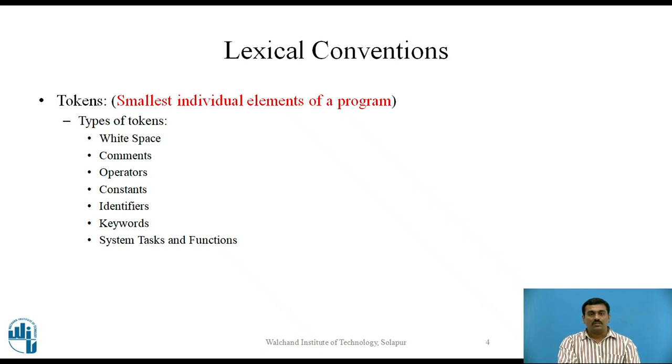Types of tokens used in Verilog are namely whitespace, comments, operators, constants, identifiers, keywords, and there is one more category called system tasks and functions.